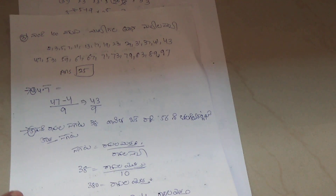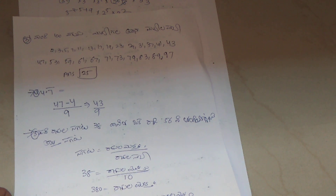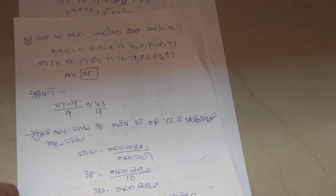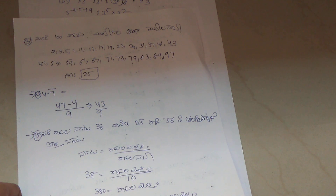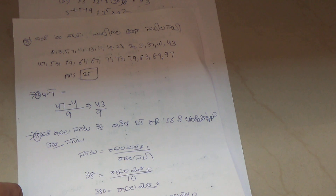The prime numbers between 1 to 100 is 25. Prime numbers are divisible by 1 and the number itself only — 2, 3, 5, 7... So the answer is 25.